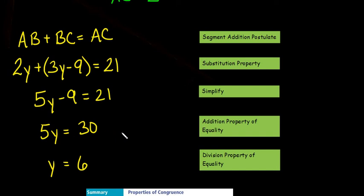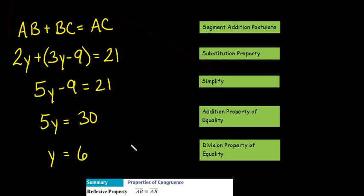5y equals 30. We used the addition property of equality that time because we added 9 to both sides. And then y equals 6. That's using the division property of equality where we divided both sides by 5. Now, we will also be using some properties of congruence.